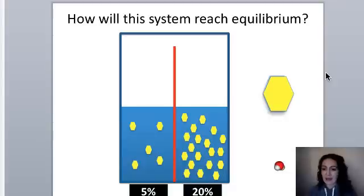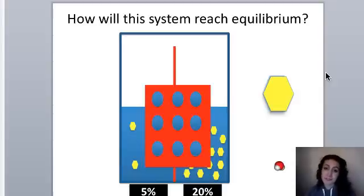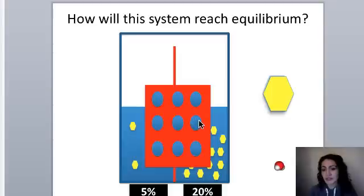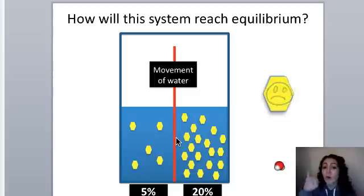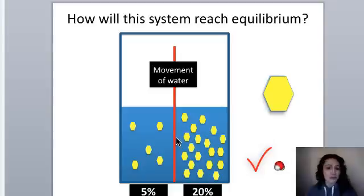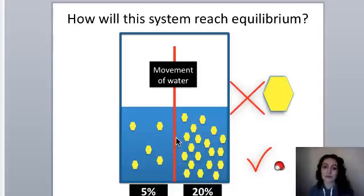Between glucose and water, glucose is the larger molecule. Now look at the semipermeable membrane — it's porous, and comparing the pore size to the molecule sizes, you can determine that sugar cannot pass through because it's much bigger than the pores, but water can pass through. So solutes will stay put, and we'll only see the movement of water. Think about which direction water will move — to the right or to the left?